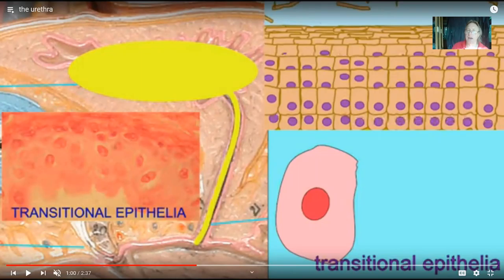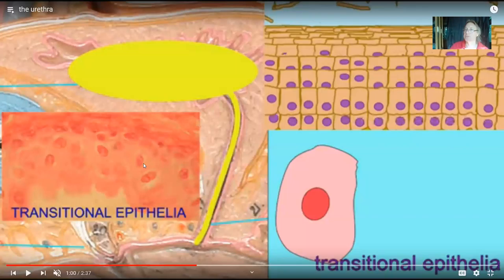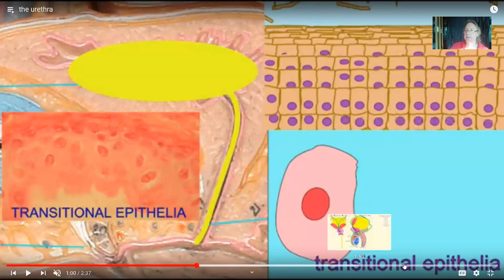The bladder is lined by transitional epithelia, which can stretch, and the urethra is lined by stratified squamous epithelia with its multiple layers. These cells can sometimes be sloughed off and enter the urine. So there can be transitional epithelial cells in urine originating from the bladder, or squamous epithelial cells from the urethra — both of which are normal.